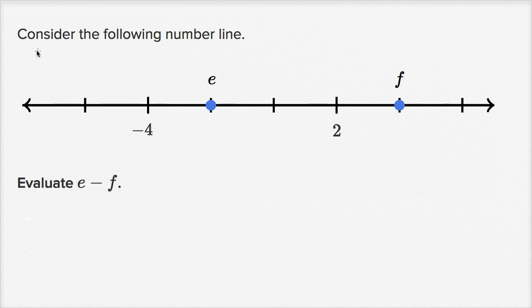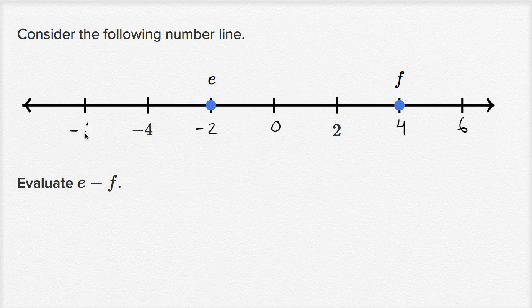Consider the following number line. They didn't mark off all the numbers here. This is negative four, e is at this point, and then we go to two. So it looks like we're counting by twos: negative four, negative two, zero, two, four, six — and negative six on the other side. Between negative four and two you increase by six, and we have three hash marks, so each hash mark increments by two. Now we know what all the points on the number line are.